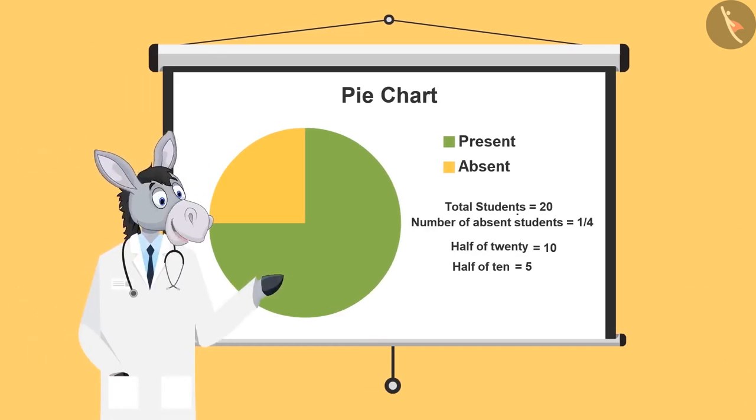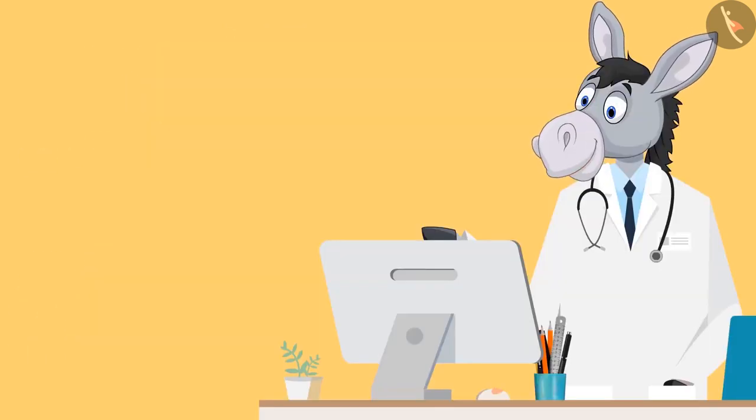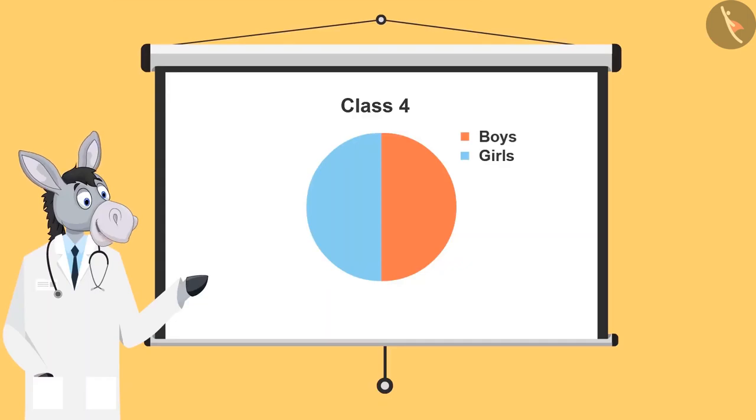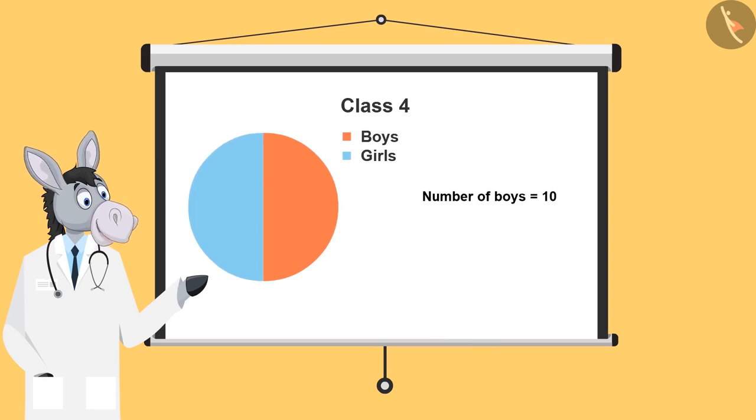Very good. Now let's look at one more example. Now all of you, look at this chart. And think, if there are half boys and half girls in a class, and the number of boys is 10, then what will be the number of girls?